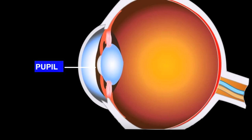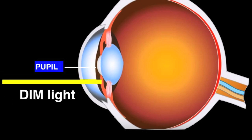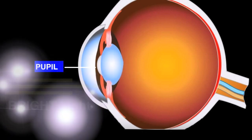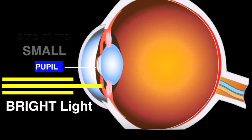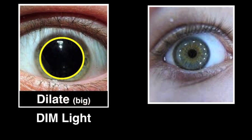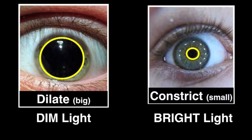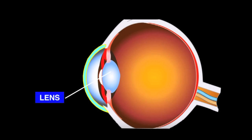When a dim light enters into our eyes, our pupil becomes big in size. When a bright light enters into our eyes, the size of our pupil becomes small. When a dim light enters, the pupil dilates, and when a bright light enters, our pupil constricts. This part is called the lens.